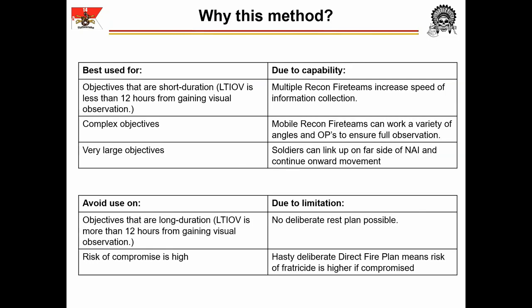The choice to use a Cavalry Team Area Reconnaissance is driven by multiple factors, primarily involving the time available to the team and the nature of the objective. It is best used for objectives that are short duration in which LTIOV is less than 12 hours from gaining visual observation, as multiple recon fireteams increases the speed and information collection. Additionally, it is suitable for complex objectives, as these mobile fireteams can work a variety of angles and OPs to ensure full observation. Finally, it is suitable for very large objectives, as soldiers can link up on the far side of the NAI and continue onward movement.